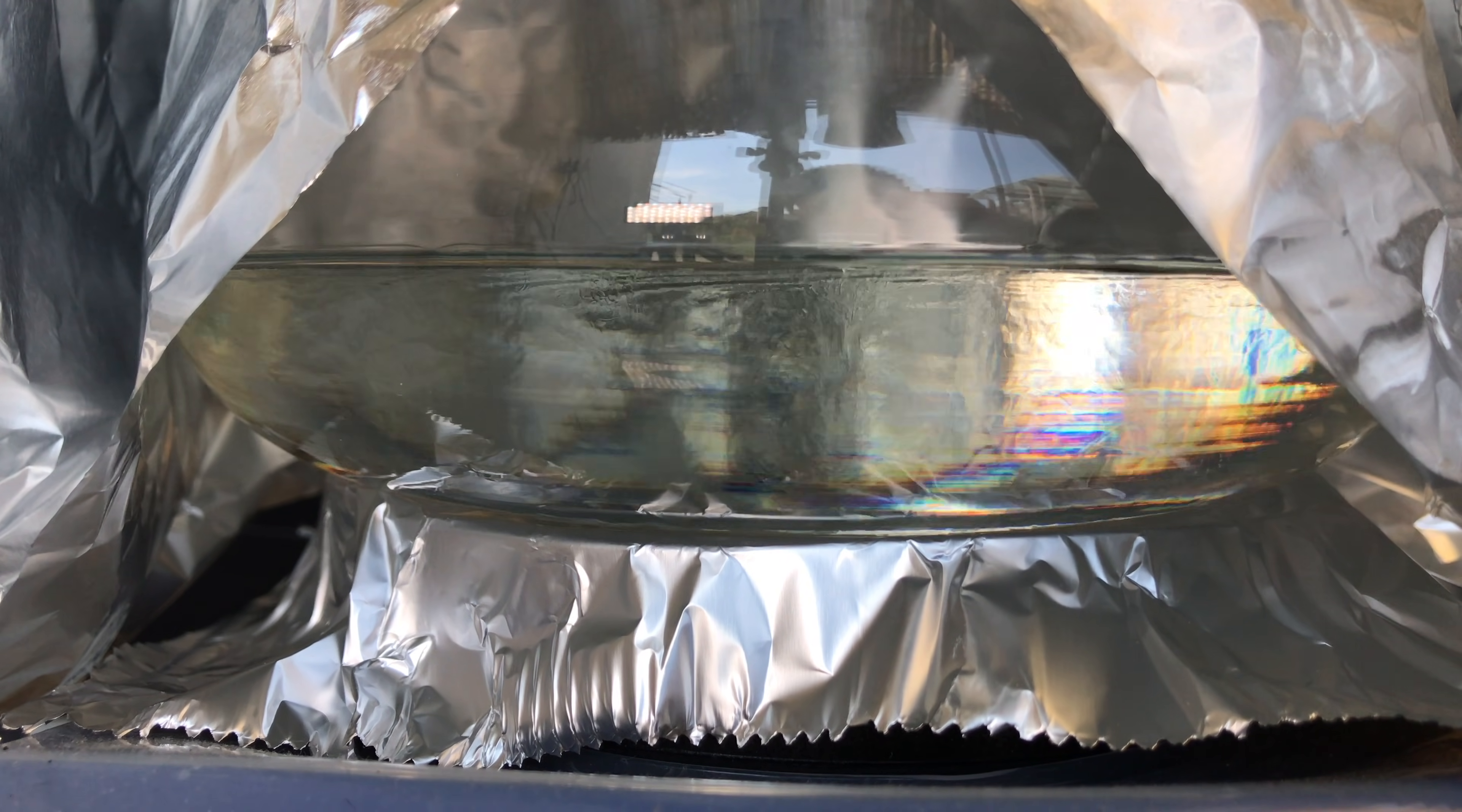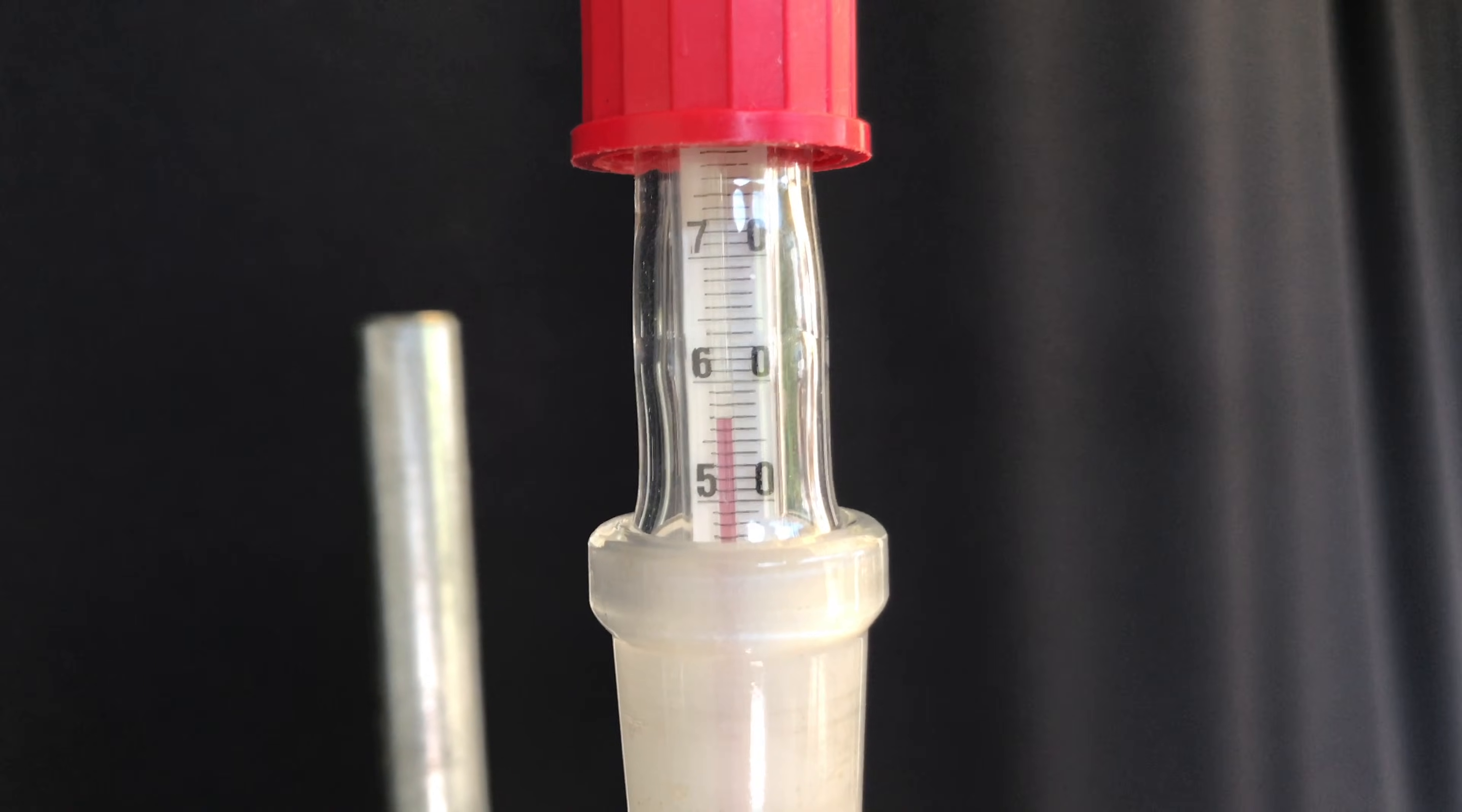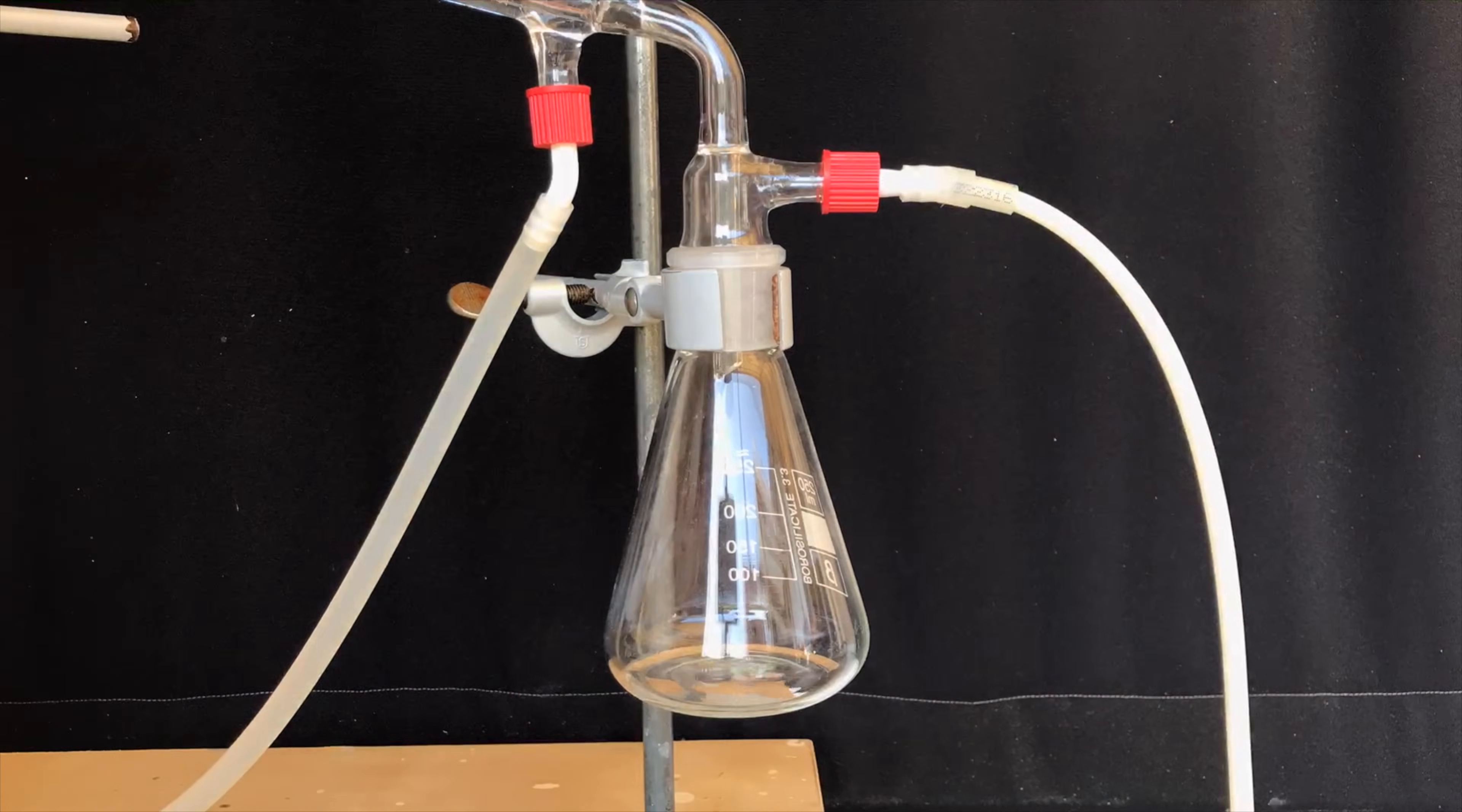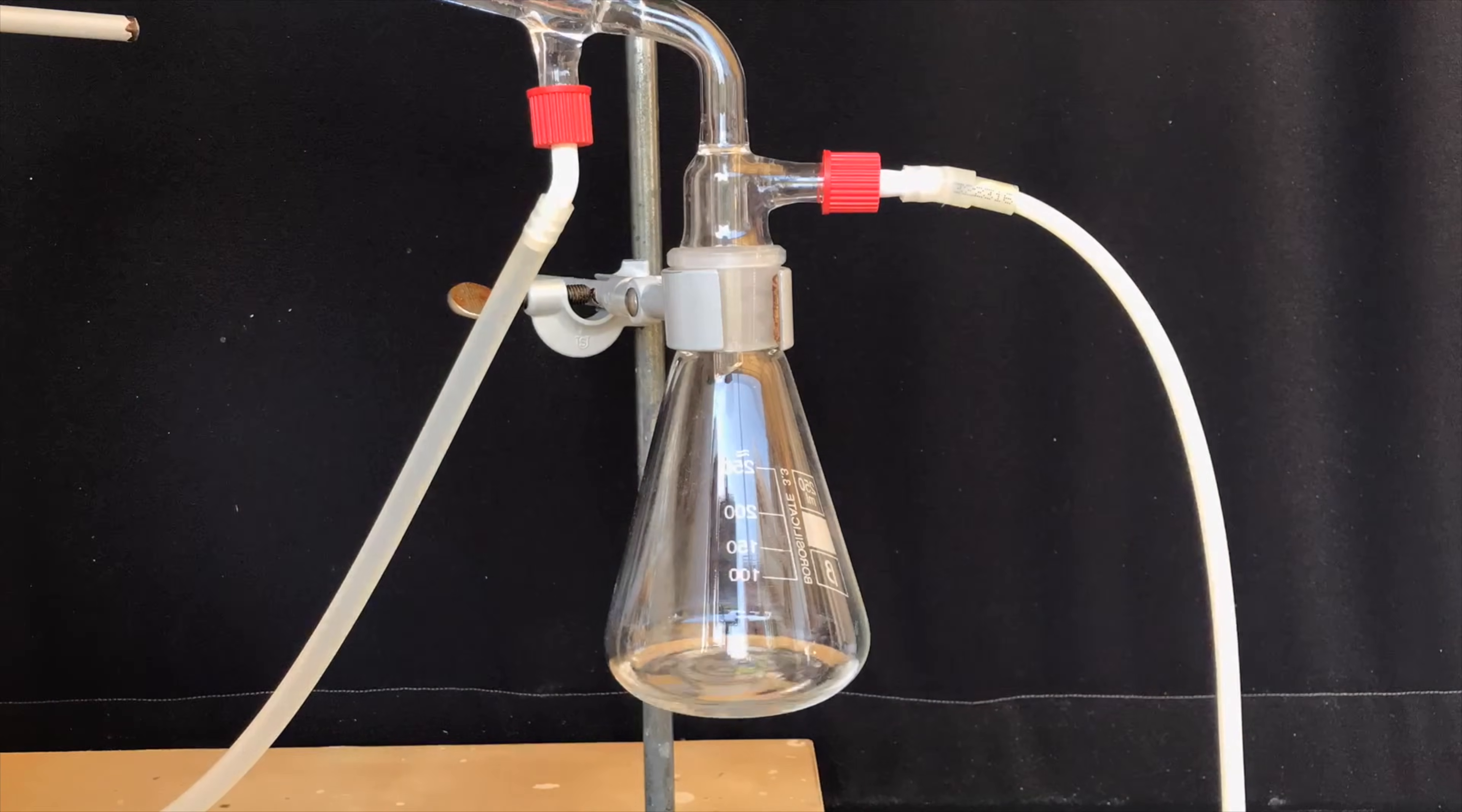In solution you have an equilibrium between acid and acid chloride and as propionyl chloride can easily be distilled off, we can remove it from the equation. The hot plate was set to a temperature of 200 degrees C and what came over had a temperature of between 60 and 85 degrees C.